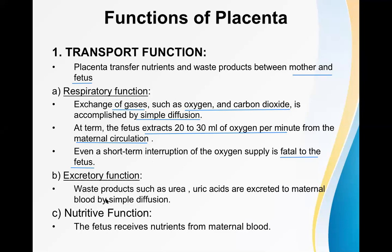The excretory function involves waste products produced by the baby — such as urea, uric acid, and creatinine — passing towards the maternal circulation by simple diffusion. The nutritive function means the baby obtains nutrients from maternal blood through the placenta, with glucose being the most important substance.